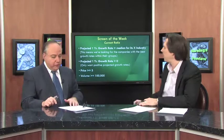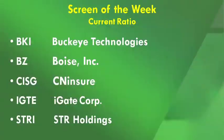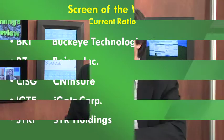About 30 stocks came through the screen. Here are five: Buckeye Technologies, Boise Incorporated, CN Insure — that's a Chinese insurance company — iGate Corp, and STR Holdings. A very diverse set of companies, but all of these look very strong financially.